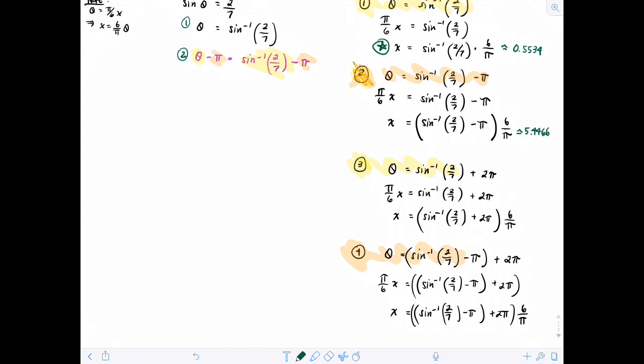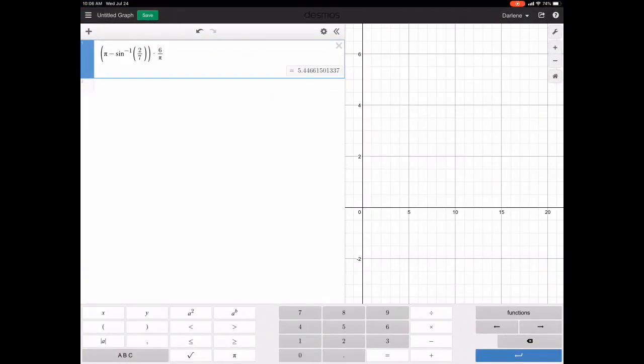Now let's do this other one where we add 2 pi and then times 6 over pi. So let's edit this one. So this will be 2 pi. I'll change the subtraction to plus, and I get 12.5534.